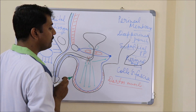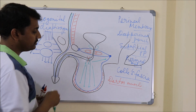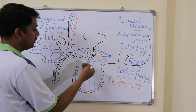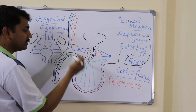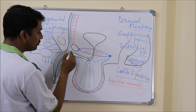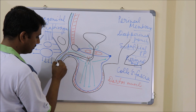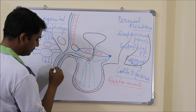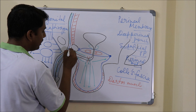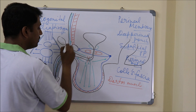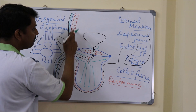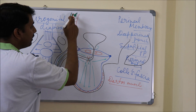The urine can also go anteriorly — it can enter into the penis. The urine can also enter into the anterior abdominal wall, between the muscles of the anterior abdominal wall and this membranous layer.